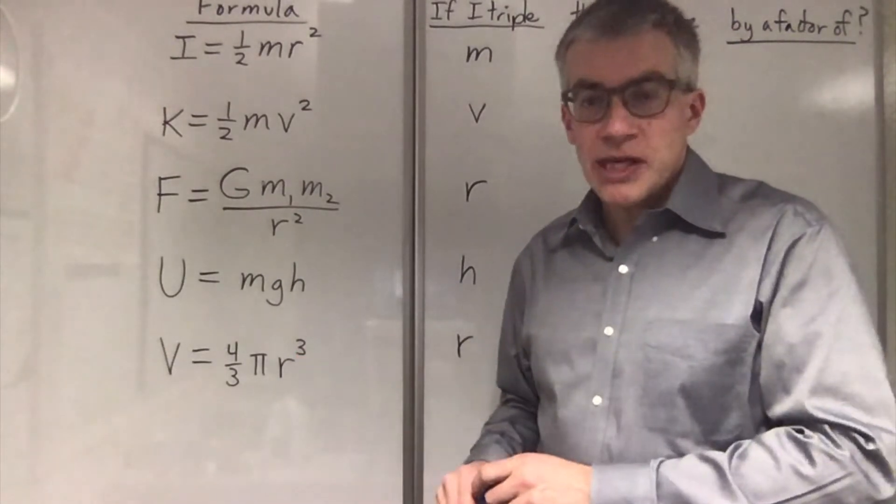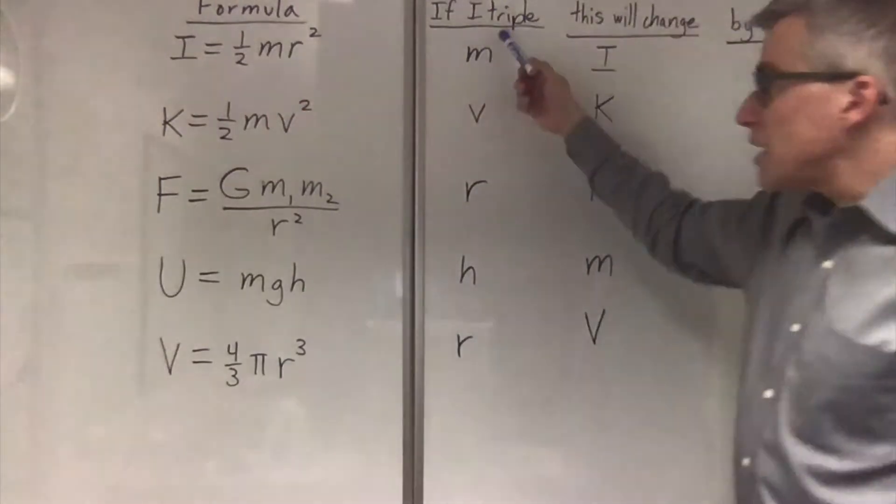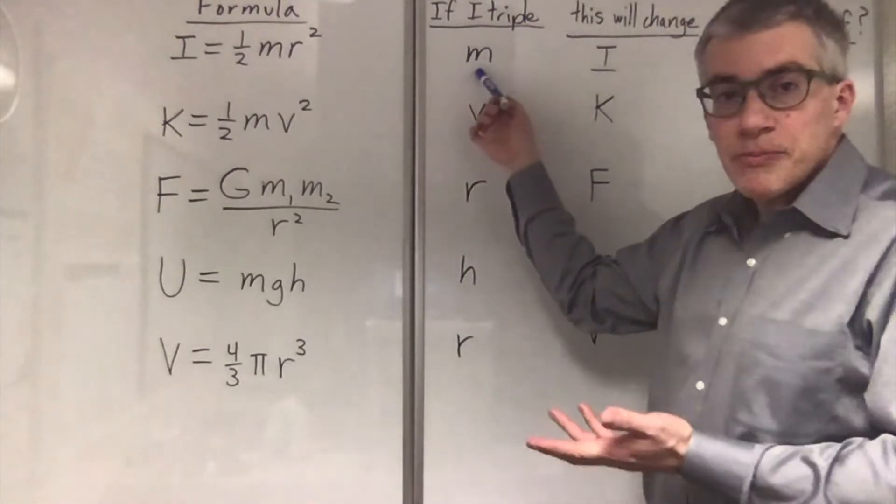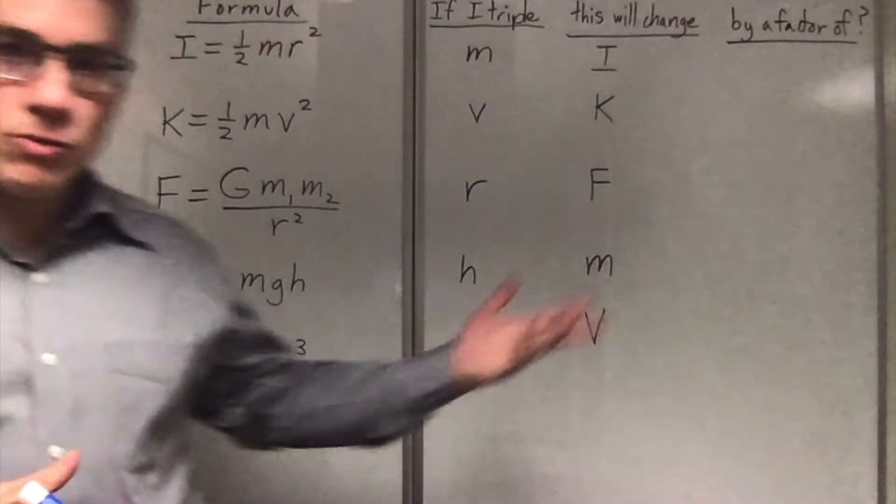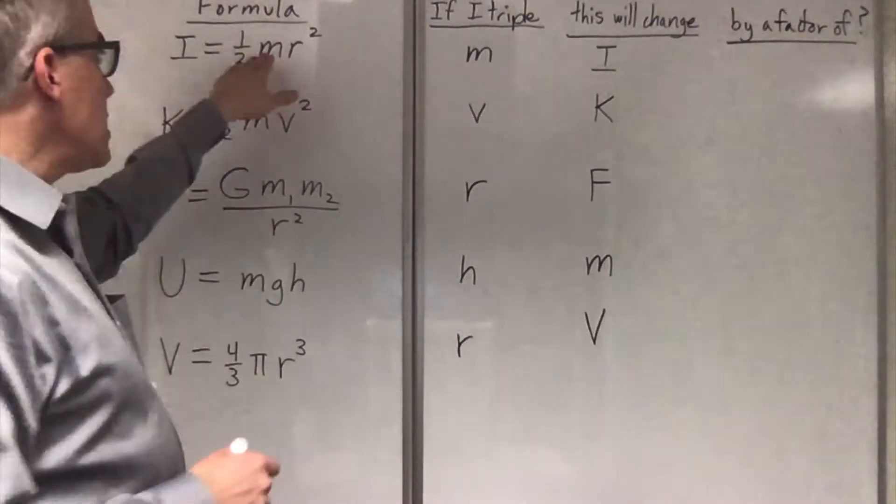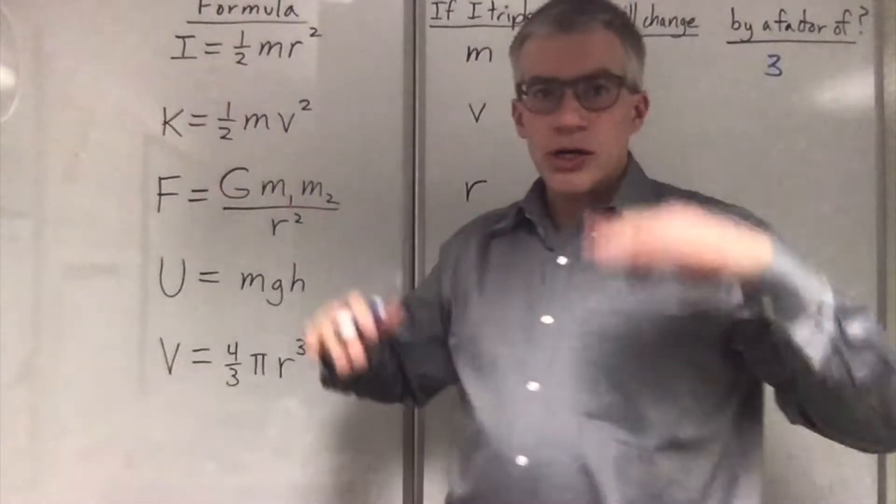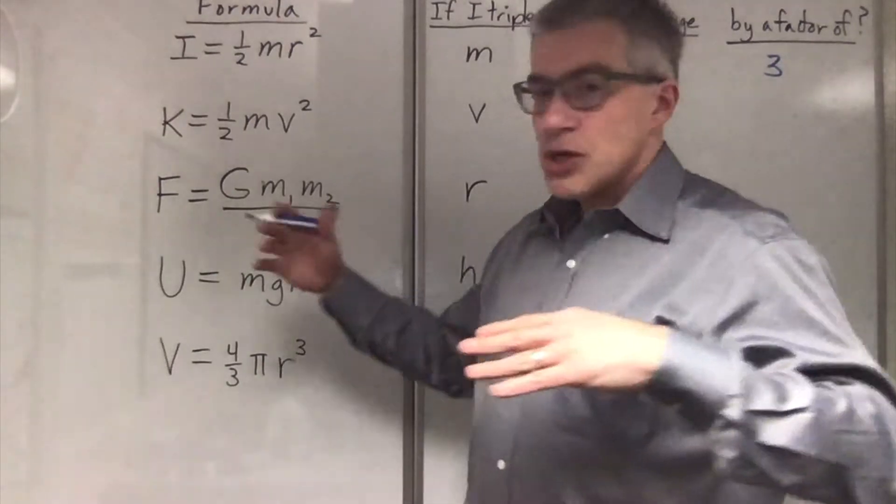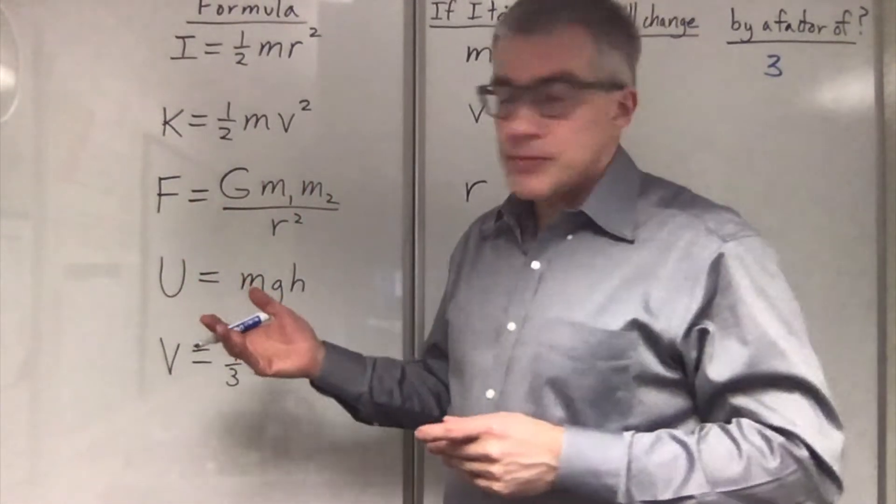So, two variables are going to change. We want to know how those changes are related. In the formula I equals 1 half mr squared, if I triple, for example, m, what happens to I? By what factor will that change? Well, it turns out that it will triple. Because the m and the I are both in the numerators, so they are directly proportional. And the m isn't squared. And neither is the I.